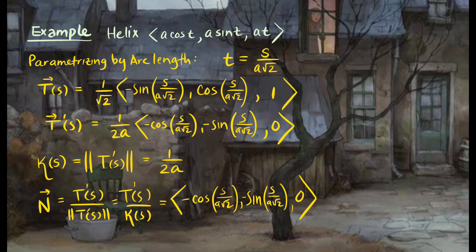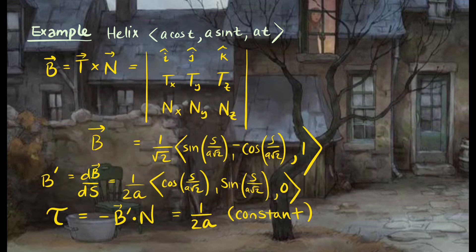Let's look at an example from before: the helix from Part One. We parametrize it by arc length and find the unit tangent vector T, with curvature 1/(2a). From that we calculate a unit normal vector N — the second vector in our frame. Now we have T and N and will take their cross product to get the binormal vector B, the third vector in our frame. The cross product is found using the determinant.